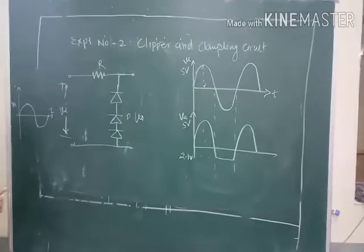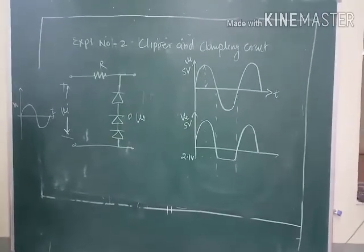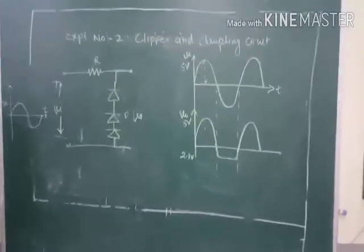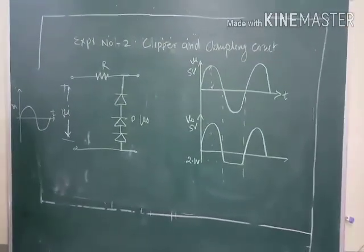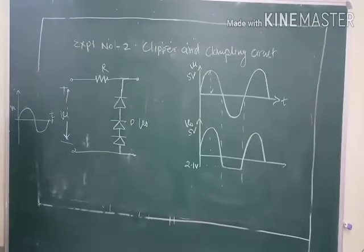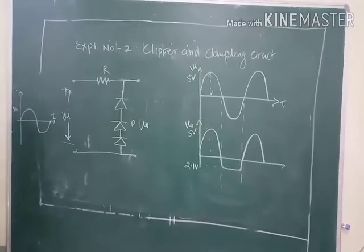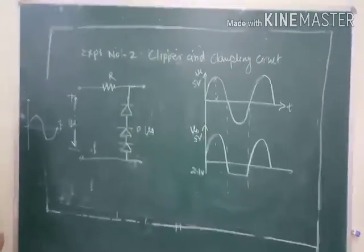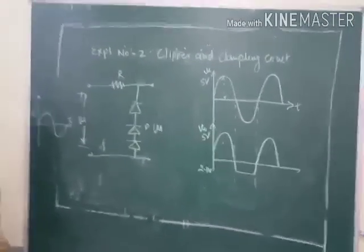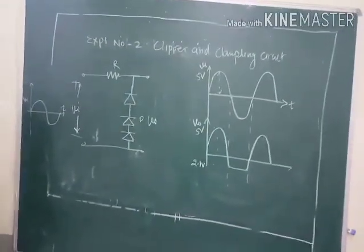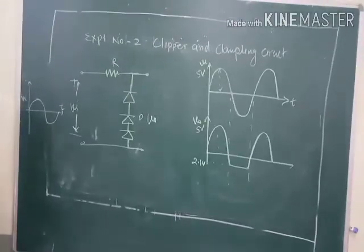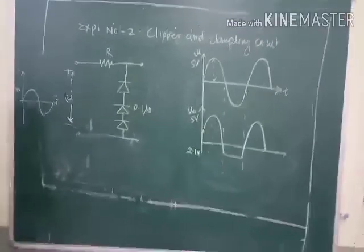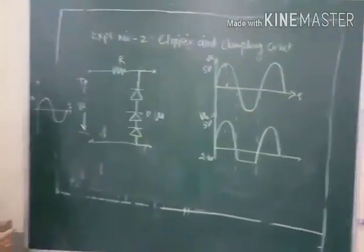Hello students. Experiment number 2 is Clippers and Clampers. In unit number 1 we started with the ideal diode, and in experiment number 1 we discussed the VI characteristics of the junction diode. Now we will move towards the application of diode. Various applications include the Clipper and Clamper circuits, various wave shaping circuits, and rectifier circuits. Today we discuss the most important application: the Clipper and Clamper circuit.